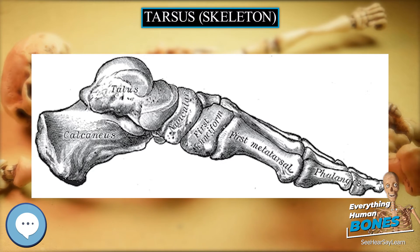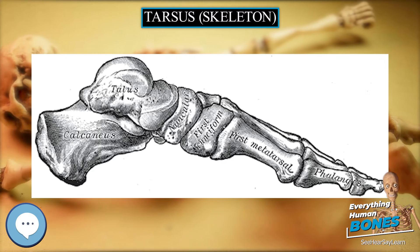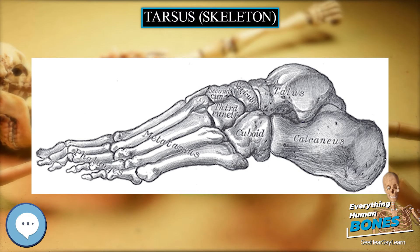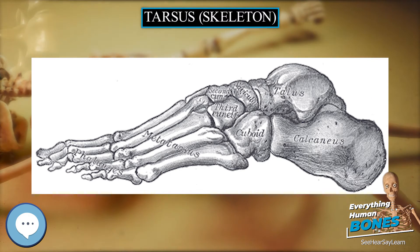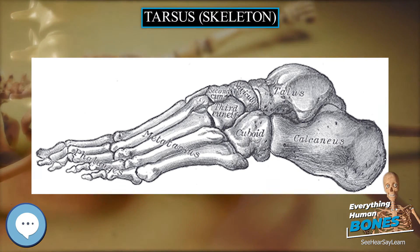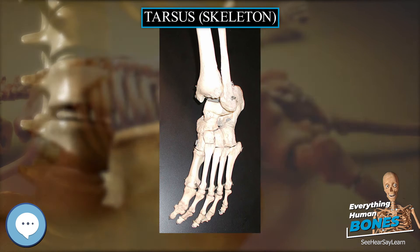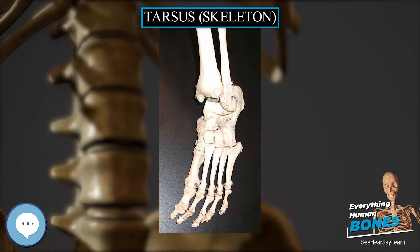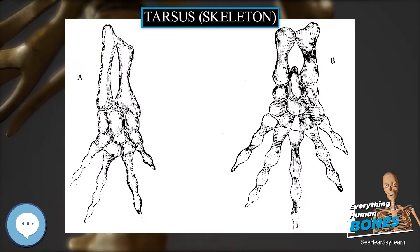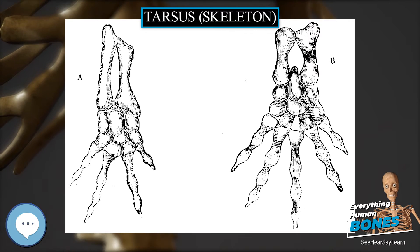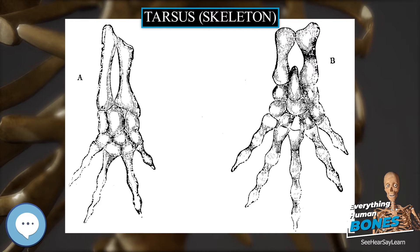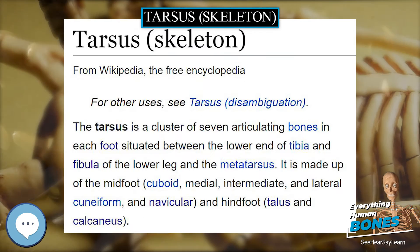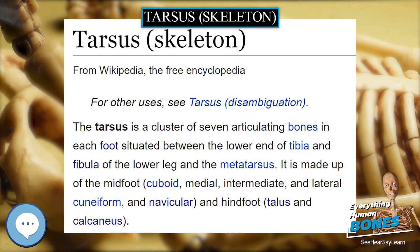The motions of the subtalar and transverse tarsal joints interact to make the foot either flexible or rigid. With the subtalar joint in eversion, the two joints of the transverse joint are parallel, which makes movements in this joint possible. With the subtalar joint in inversion, the axes of the transverse joint are convergent, and movements in this joint are thus locked, making the midfoot rigid.